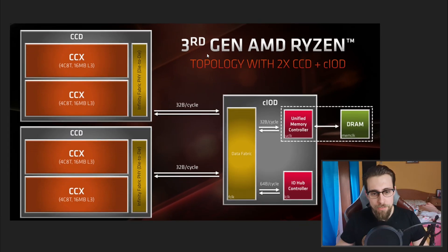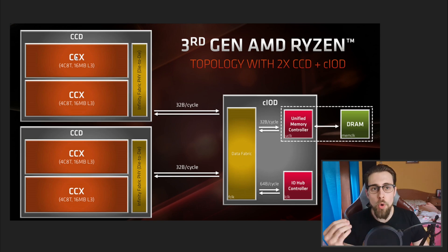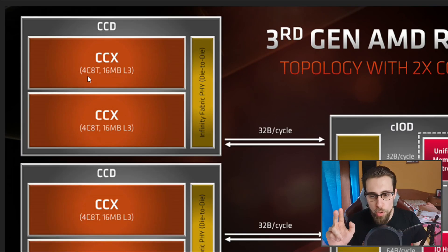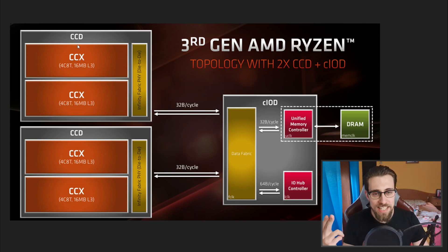Let's start from the beginning. Here you have the 3rd generation and this is how it works. Let's start from the CCX, which is a core complex — think of it as a core group. Every CCX in the 3rd generation using 7 nanometers has a maximum of 4 cores and 8 threads per CCX. But you can have 2 CCX inside a CCD, so you can have up to 8 cores and 16 threads in a single CCD.